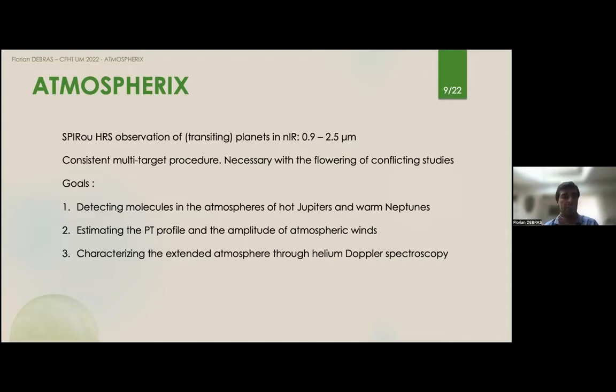Finally, because SPIRou also has a line of the metastable helium triplet in its wavelength domain, we can have information about the escaping extended atmosphere. With helium Doppler spectroscopy, we have a lot of information on the evolution of planets which are very close to their star. Of course, if you lose some mass, this is going to affect a lot of the planet and helium Doppler spectroscopy gives you some proxies of this mass loss.